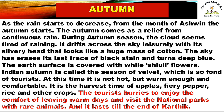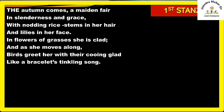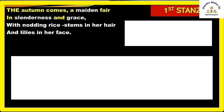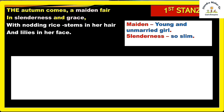Let's see the poem stanza by stanza. First stanza: 'The autumn comes, a maiden fair, in slender nest and grace.' Maiden means a young and unmarried girl; fair means attractive and beautiful; slender nest means so slim; and grace means charming and beautiful.